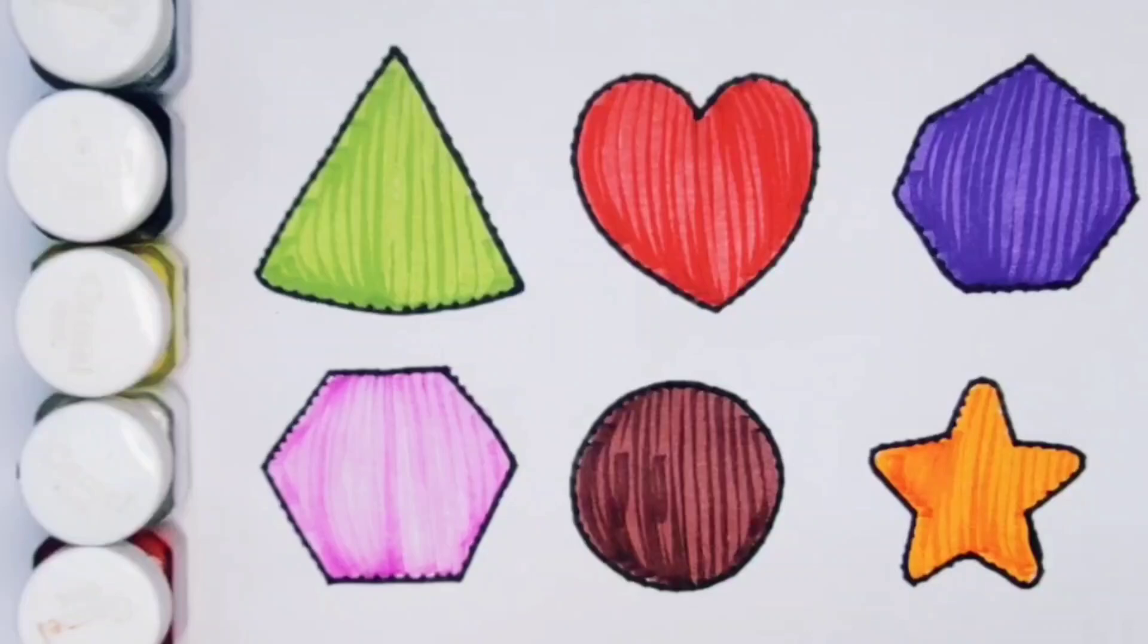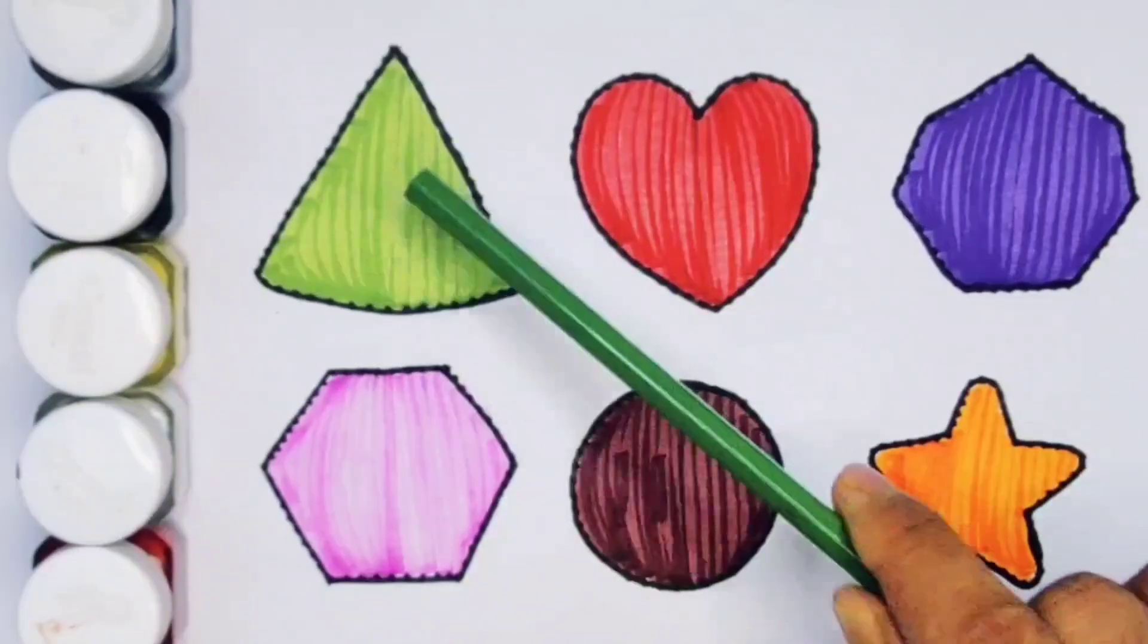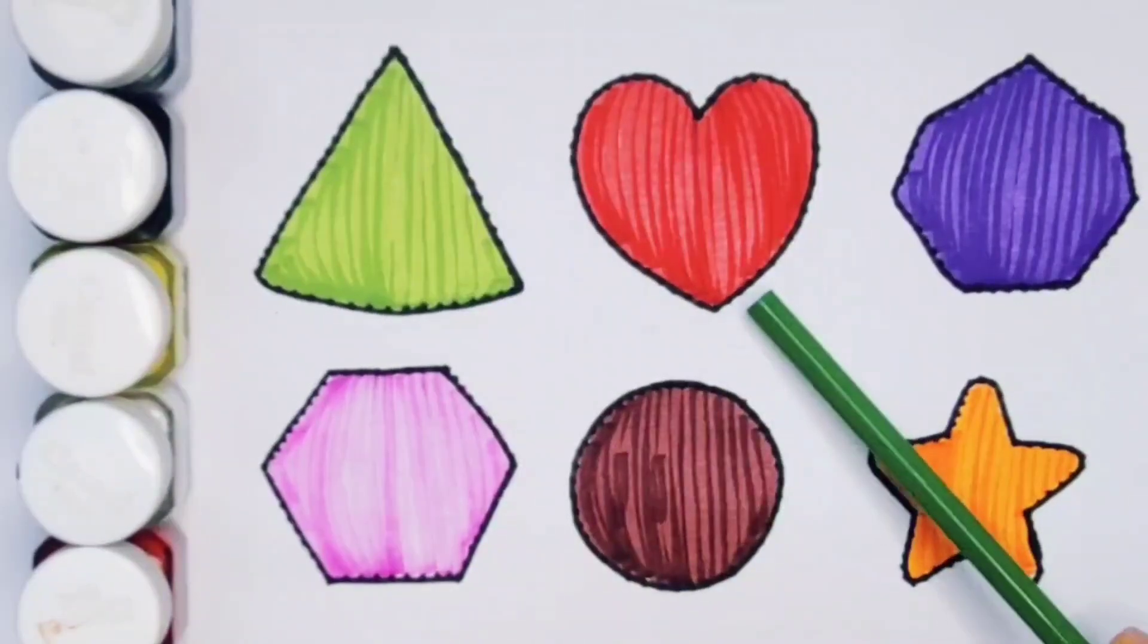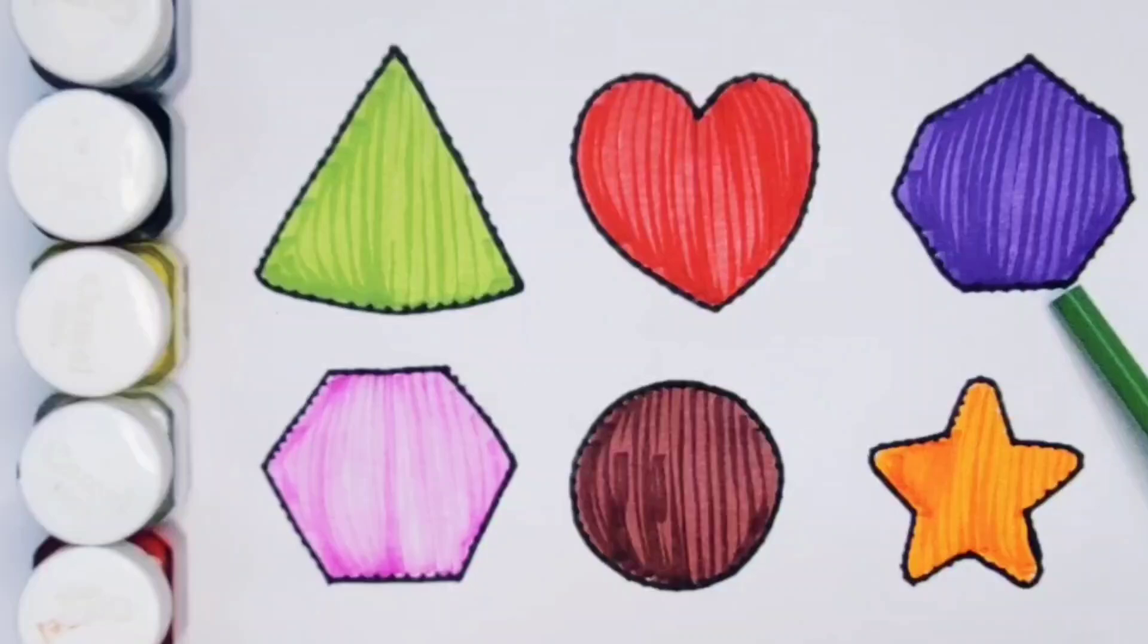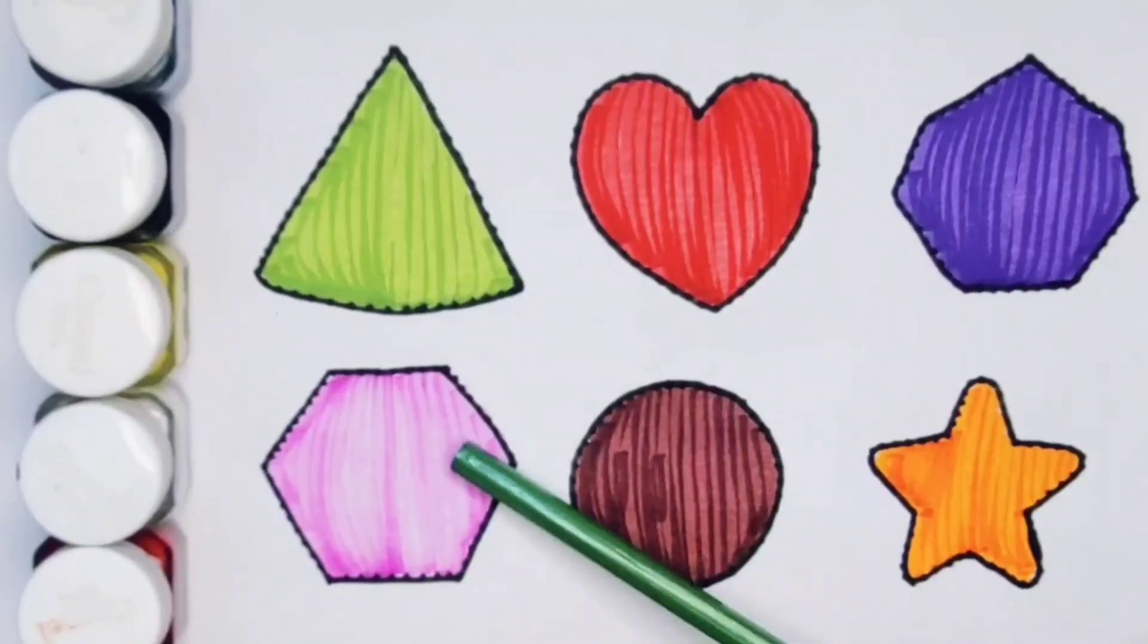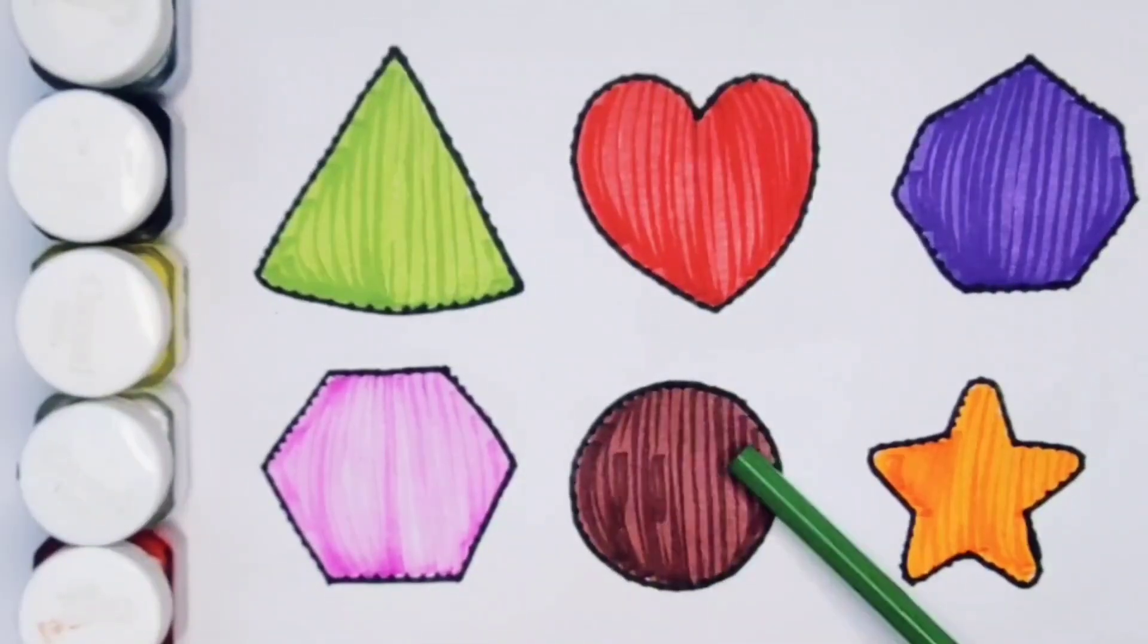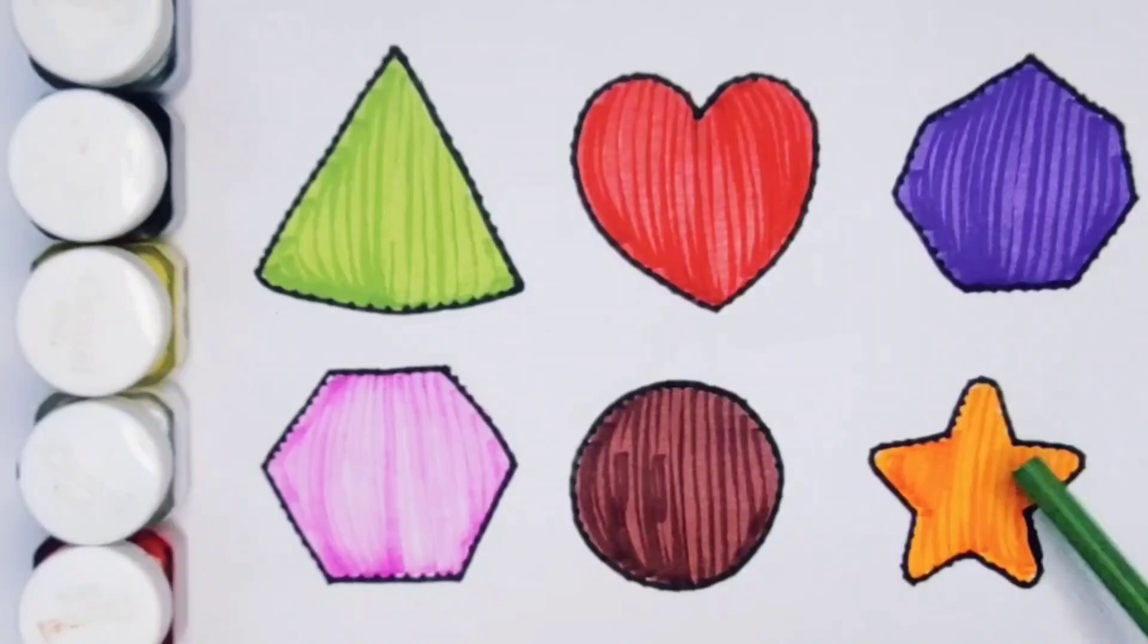What we learned: we learned green color triangle, red color heart, purple color heptagon, pink color hexagon, chocolate color circle, orange color star.